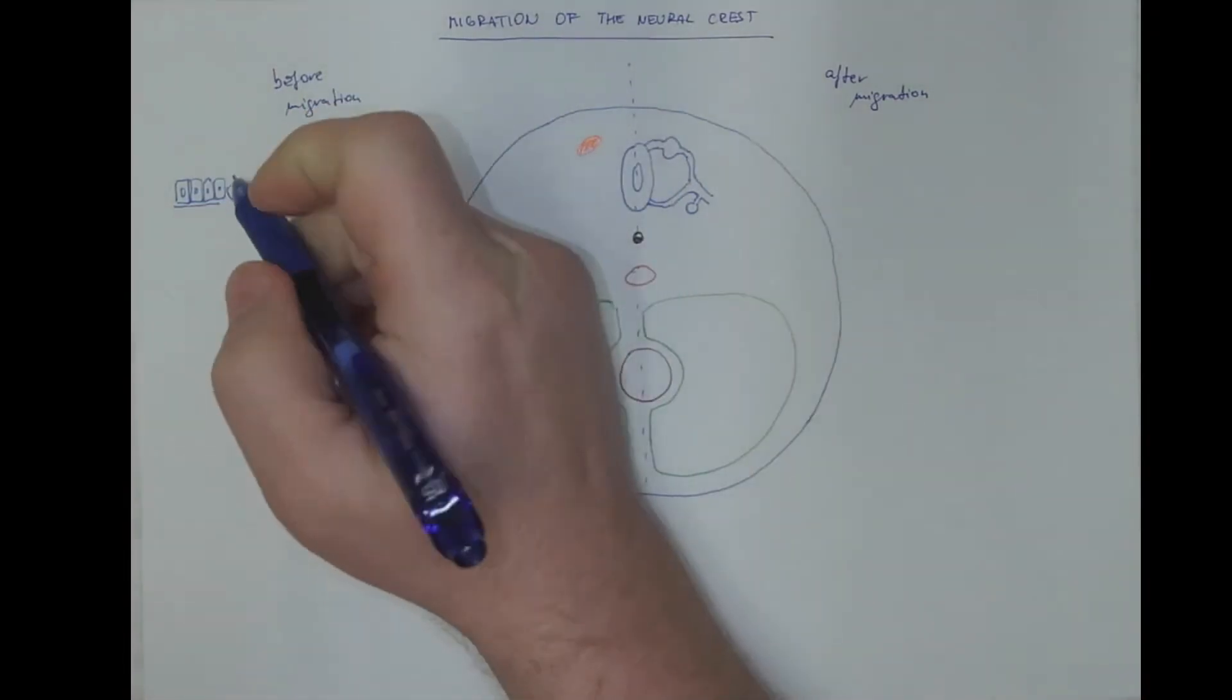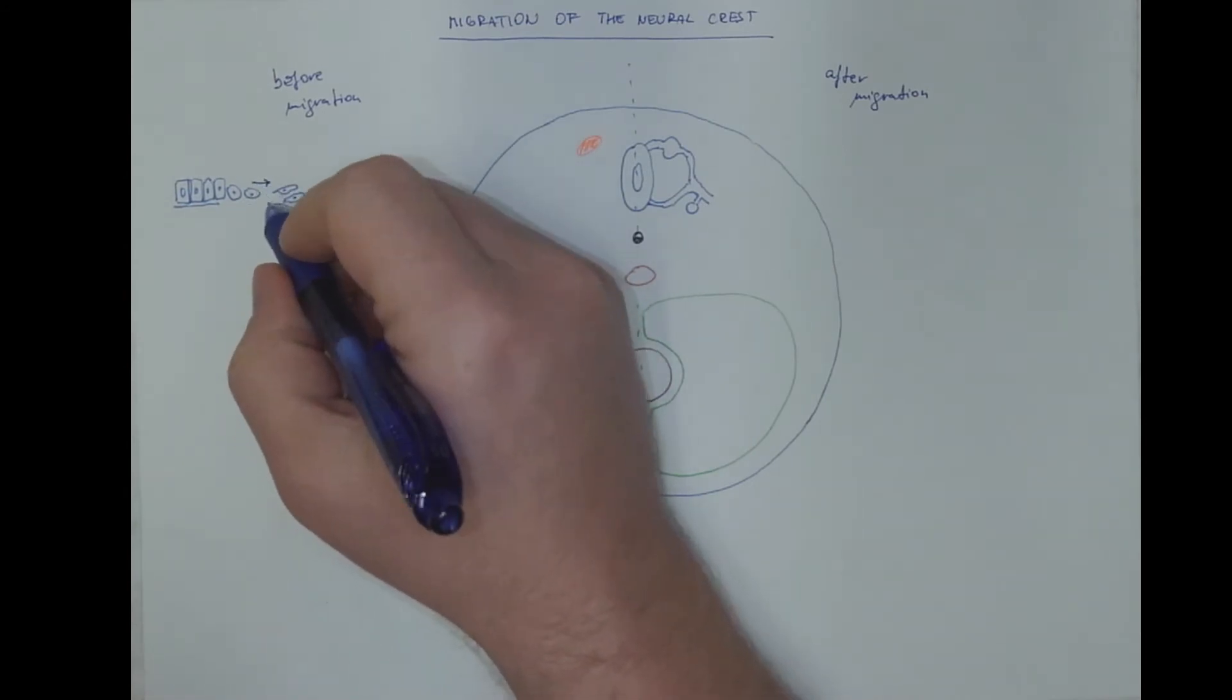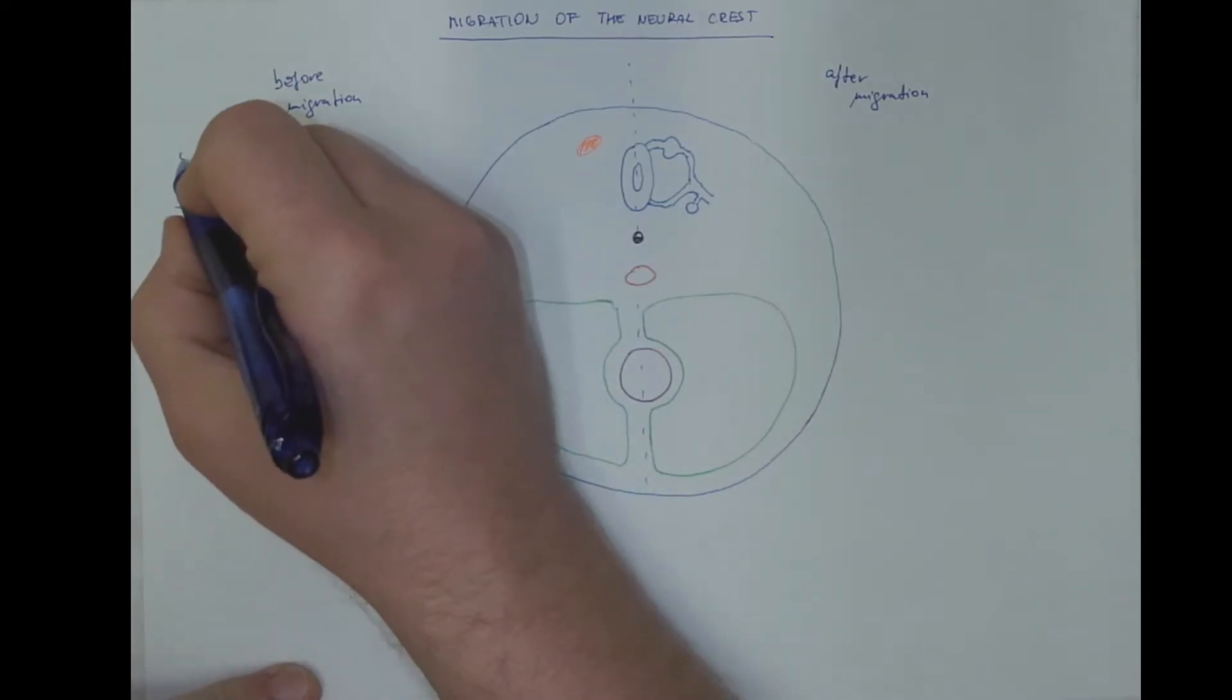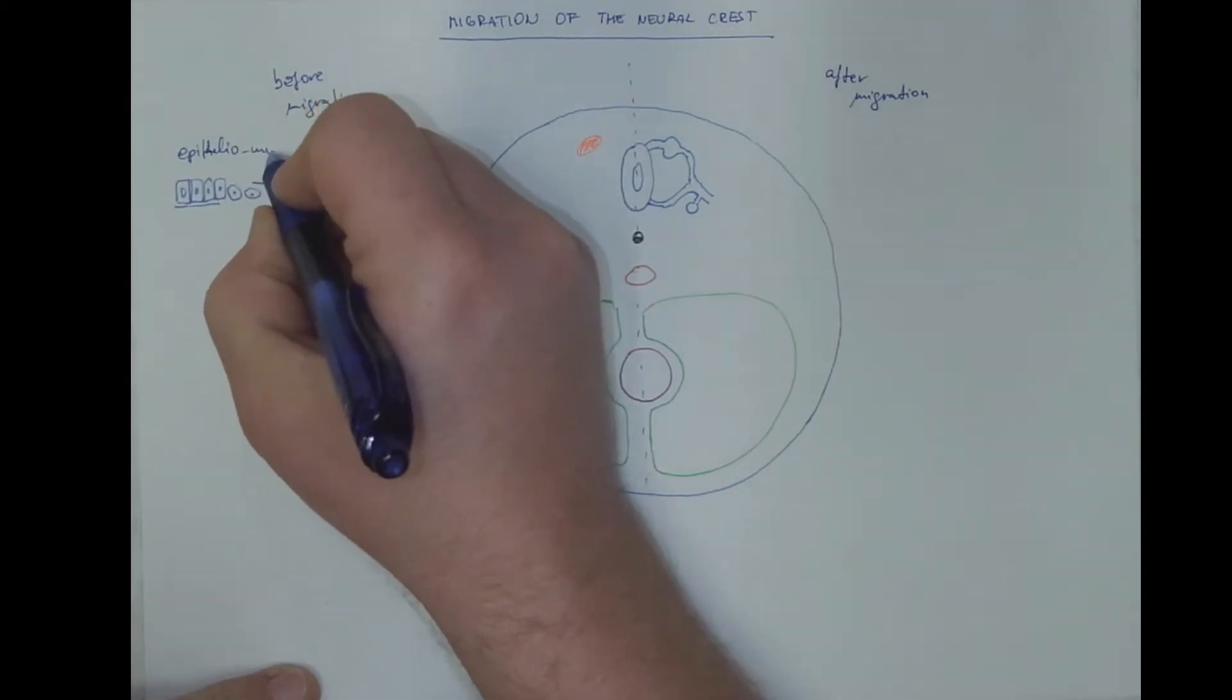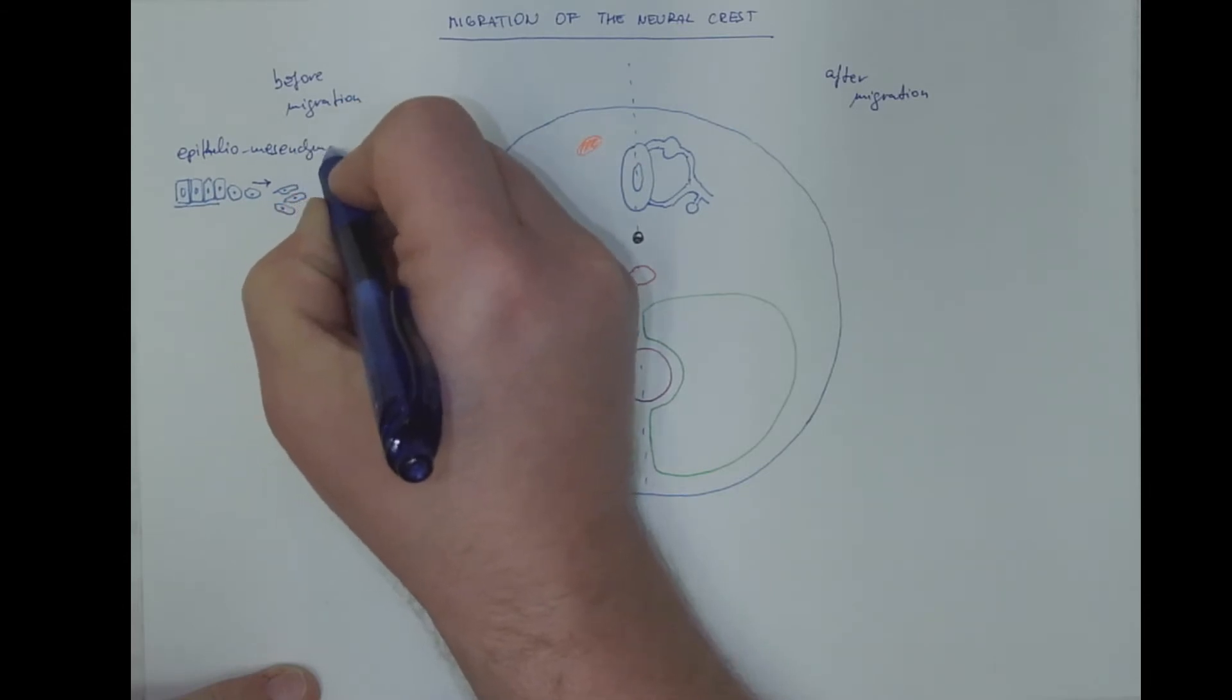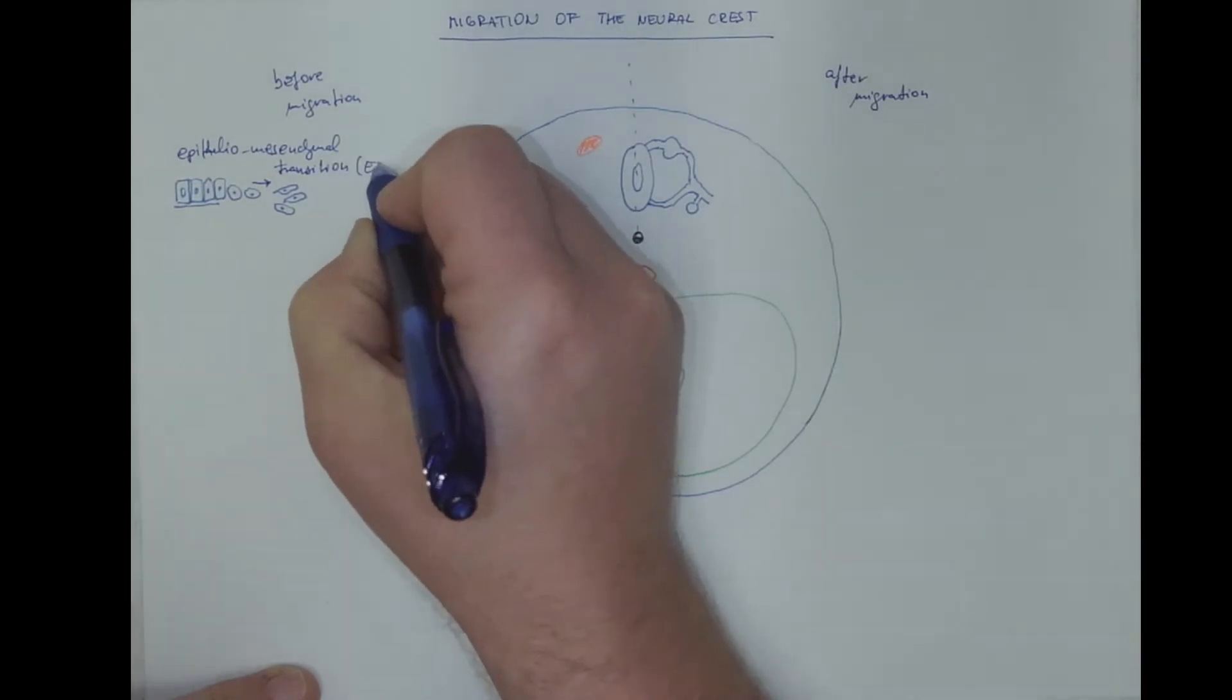And they will increase their migration potential. This is called epithelial-mesenchymal transition, often abbreviated as the EMT.